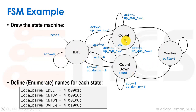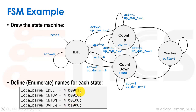With four states, we could use a two-bit vector, but we should enumerate them with names: idle, count_up, countdown, and overflow. We use a local parameter — not a regular parameter or a `define, as local parameter is best practice. We chose one-hot encoding, where each state has one bit set: idle is 0001, count_up is 0010, countdown is 0100, and overflow is 1000. Using these names makes the code much more readable.